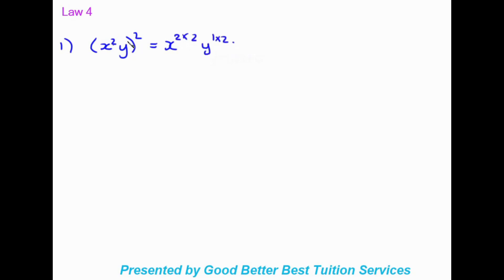Now for law number four. The example is open brackets x squared y, all squared. Law four tells us that when we have a bracket with more than one variable and a power outside, that power applies to each variable inside. So we get x to the power of two times two, and y to the power of one times two, giving us x to the power of four, y to the power of two.